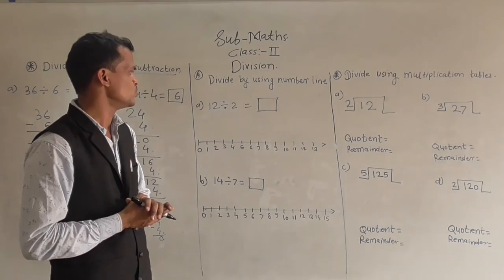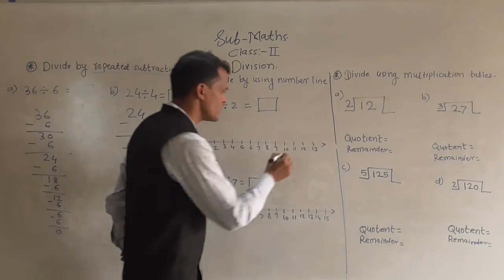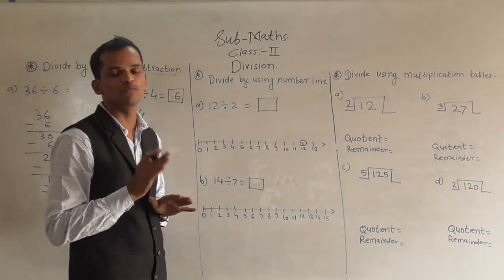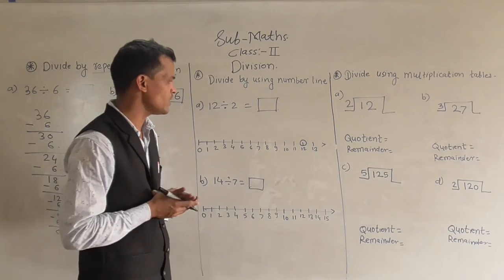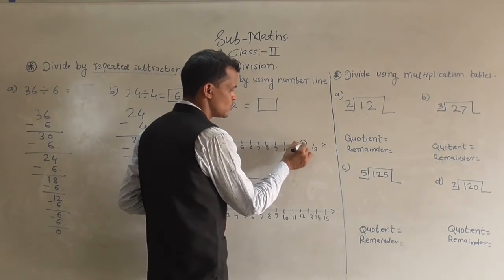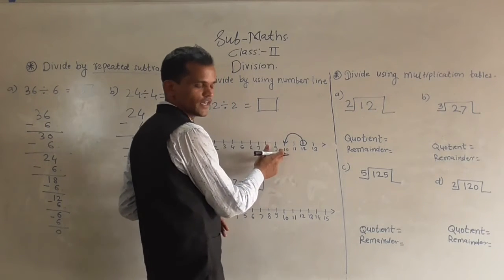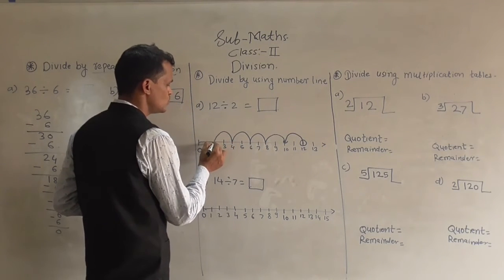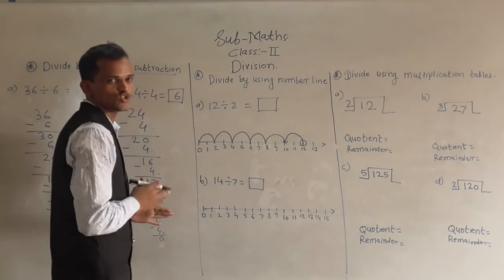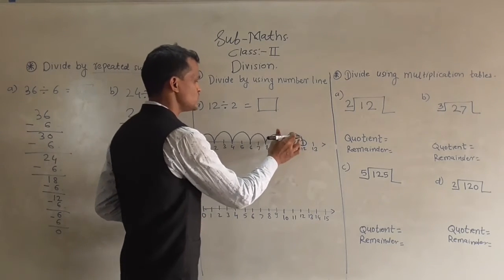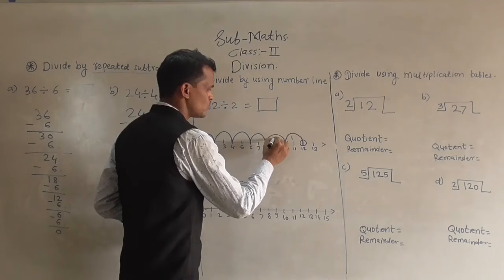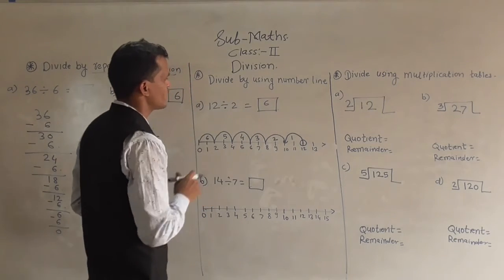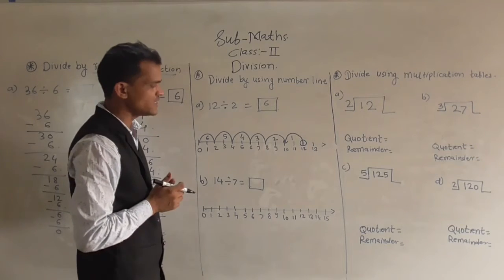12 divided by 2 — find the quotient. Locate 12 on the number line. Since 2 is the divisor, every time subtract 2 by going 2 steps backward: 12 minus 2 is 10, 10 minus 2 is 8, 8 minus 2 is 6, 6 minus 2 is 4, 4 minus 2 is 2, and 2 minus 2 is 0. When 0 comes, stop and count the jumps: 1, 2, 3, 4, 5, 6 times. So 6 is the answer. Cross-check: 2 sixes are 12, so our answer is correct.